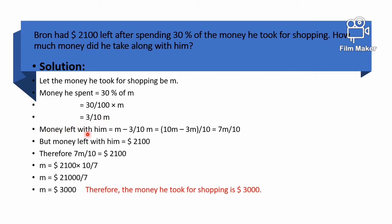Money left with him equals m minus 3/10 of m. To get m, we find the LCD, which is 10. So m divided by 1 gives 10m divided by 10. Then 10 times m is 10m, and 10 divided by 10 is 1, so 1 times 3 is 3m. Therefore 10m minus 3m equals 7m.